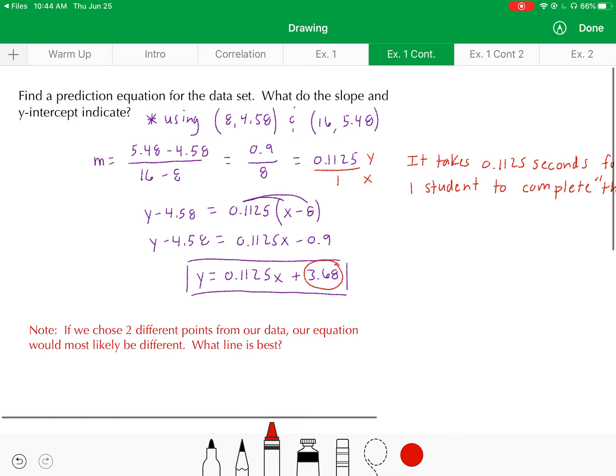Now one other thing to really make mention of is if we were to have chosen two different points from our data set, our equation would most likely be different. Probably similar—the closer the points from the data set are to a true linear relationship, the closer your equations are going to be to one another. So the question is, if I'm getting different equations using two different points, what line is the best fit line? Well that's where some statistics will come into play, and we're going to look at that a little bit in another video on how we can get technology to utilize a better statistical approach to coming up with a line of best fit. So for now, the ones that we're doing by hand, they're not quite as accurate as they could be.